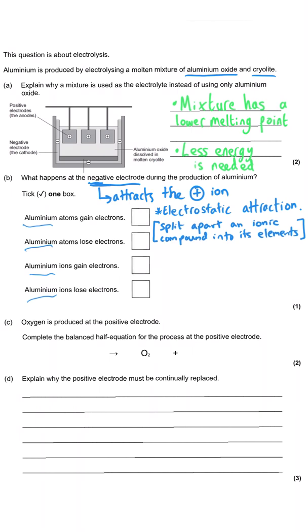The aluminium ion is positive because all metals form positive ions, and because aluminium is in group three of the periodic table it is a three-plus ion. We're turning this ion into the element aluminium — all metals have the simple formula of their metal symbol, so Al here. The aluminium is going from a 3+ ion to the element aluminium, meaning its charge goes from plus three down to zero, so it must have gained three electrons.